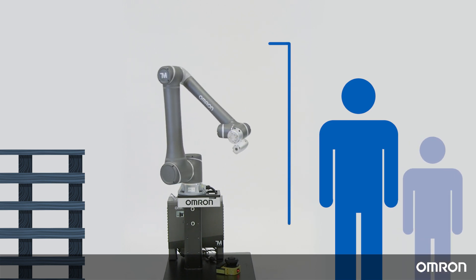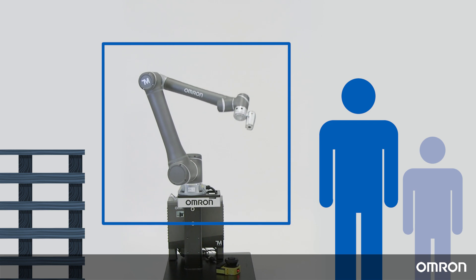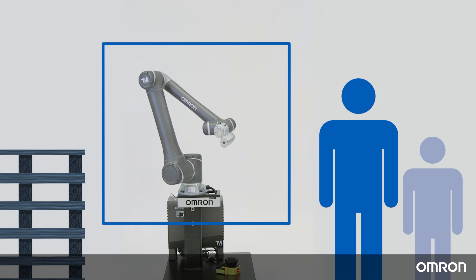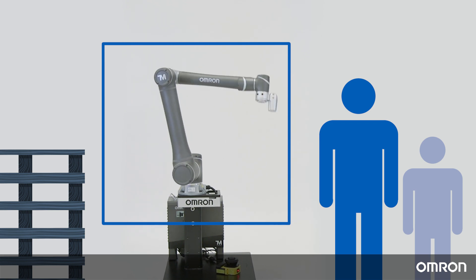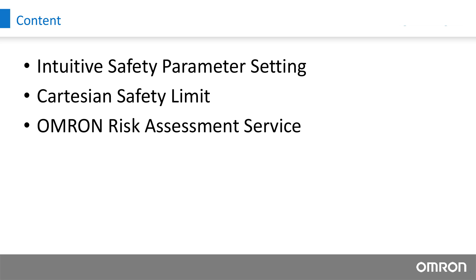In video 1, we introduced the safety standards and functions as well as stop categories and safety outputs. In this second video, we will explain the safety aspects of the robot's software, namely the intuitive safety parameter setting and Cartesian safety limit. We will then talk about OMRON's risk assessment service.